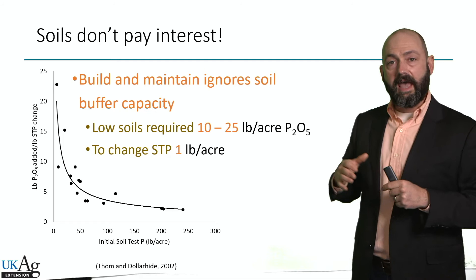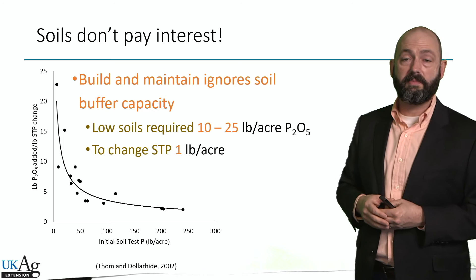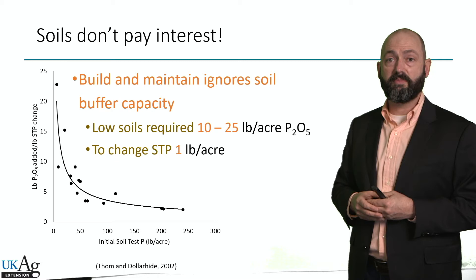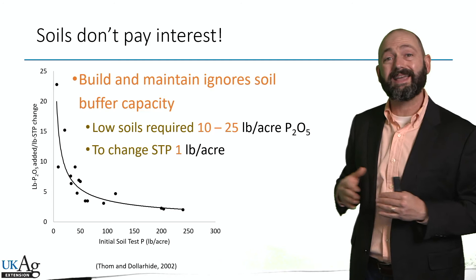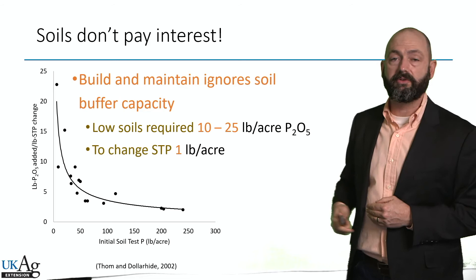You'd be pouring all of that fertilizer on there, but the sufficiency rate might be only 60 pounds of P2O5 per acre. So you're applying basically 540 extra pounds of fertilizer just to build soil test. You'd be better off putting that money in a savings account and collecting interest, because you're not getting any extra yield from that additional 540 pounds per acre that was required to build the soil test.